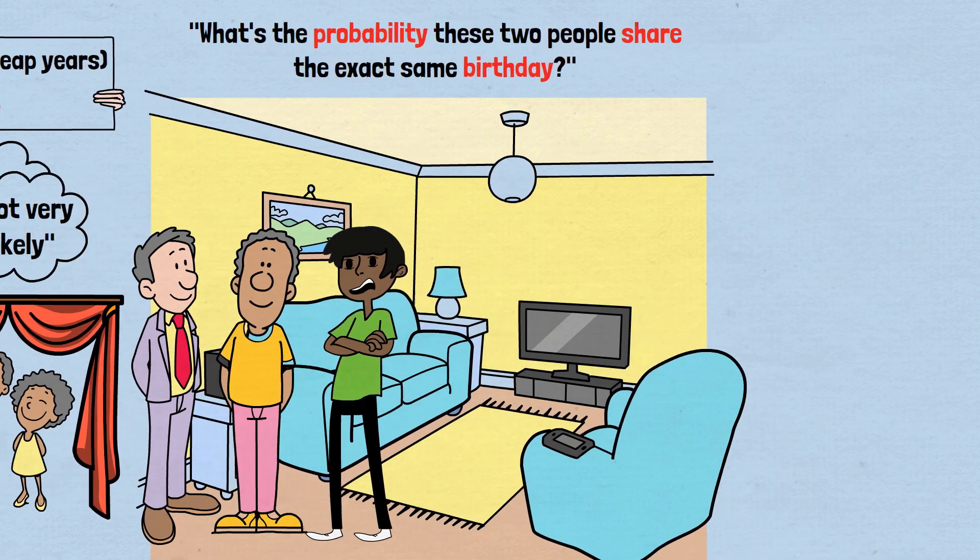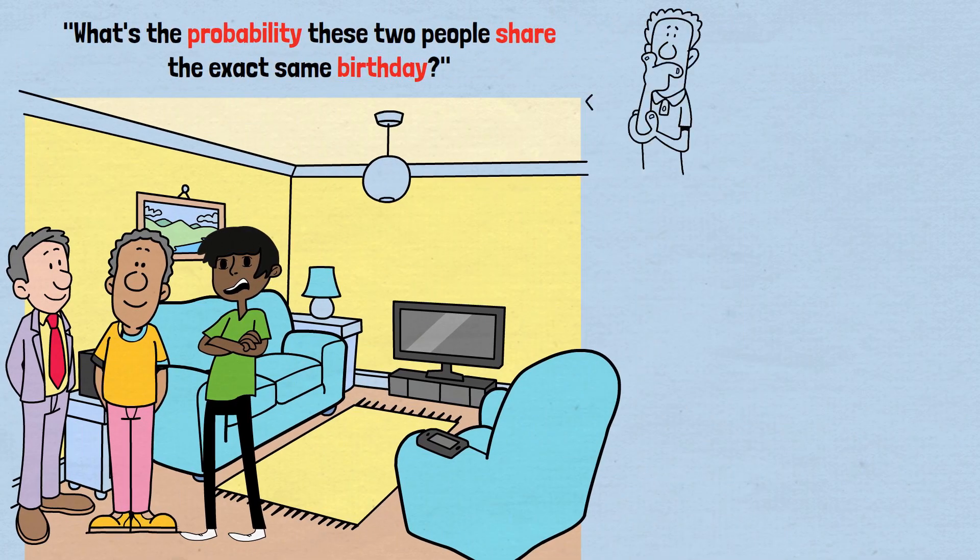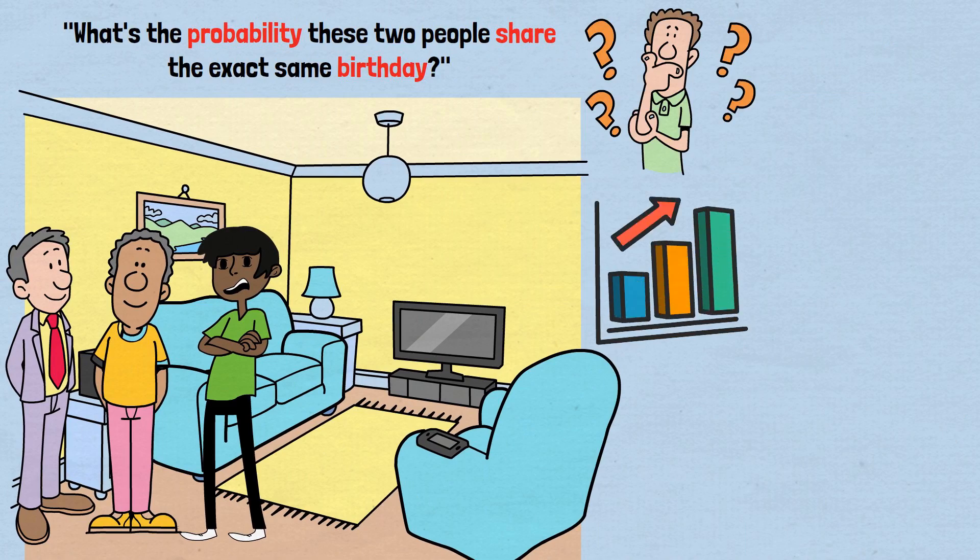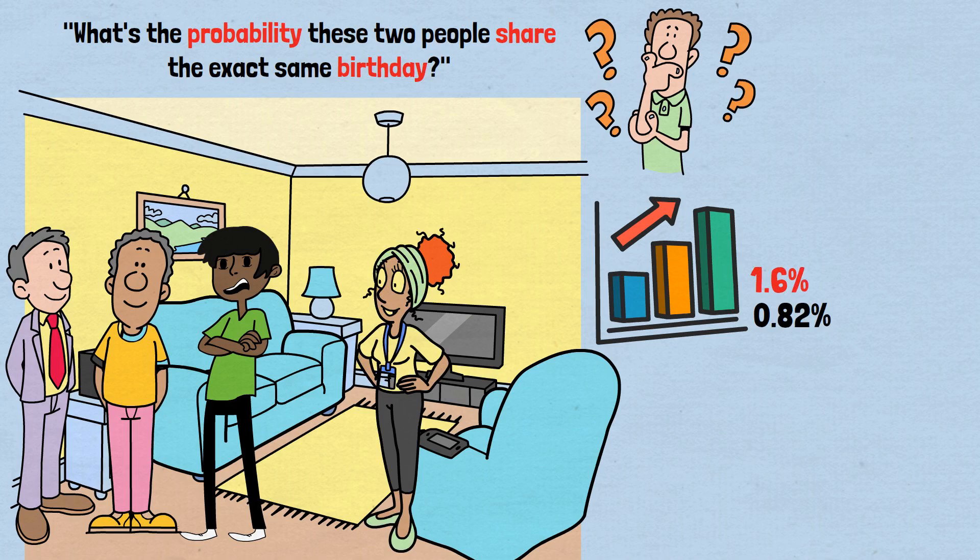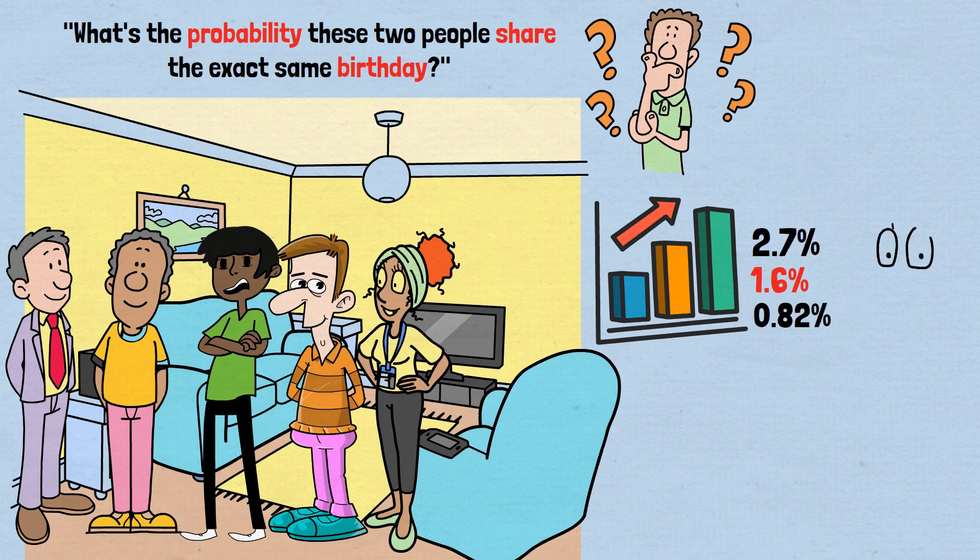Now let's add a third person to our room. What's the probability that any two of these three people share a birthday? The chances increase, but they're still quite low, about 0.82%. Add a fourth person, the probability grows to roughly 1.6%. A fifth person, now we're at 2.7%. See the pattern?